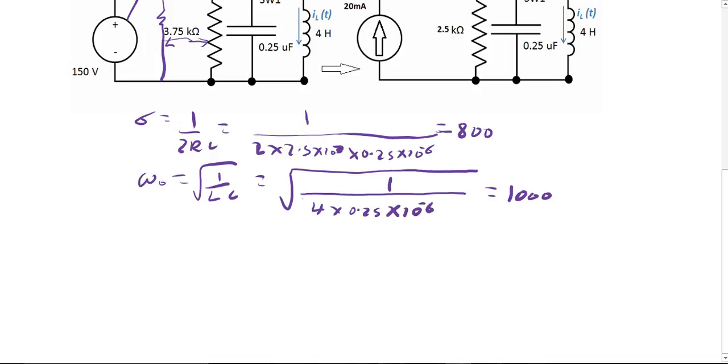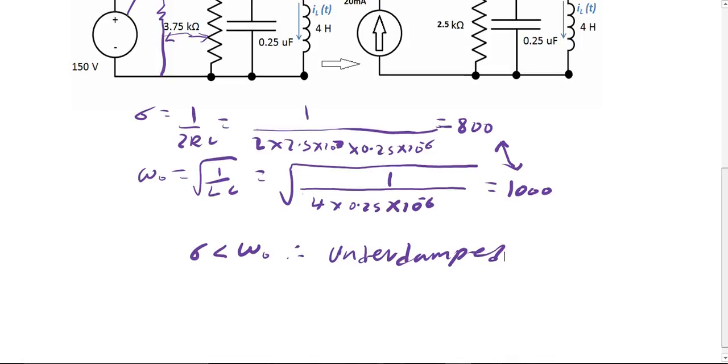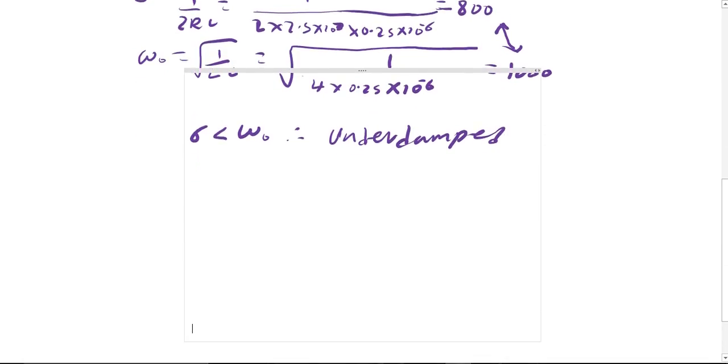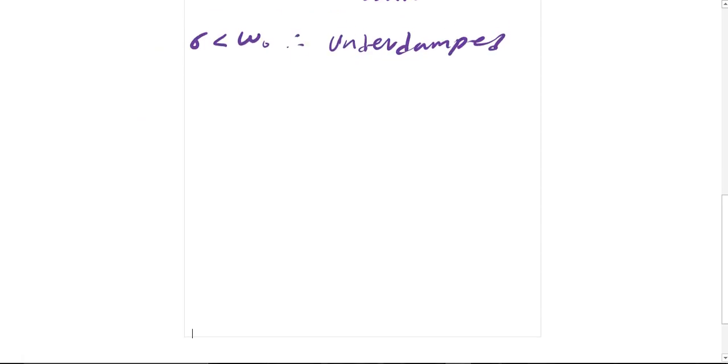So now compare these two values. As you can see, alpha is less than omega naught, therefore this is the under-damped case. So when it's under-damped you have certain equations that you use. I would suggest looking at the textbook when it's critically damped or over-damped, you use different equations.